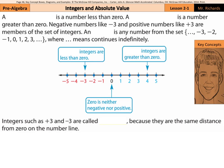Hi, Mr. Richards here. Today's lesson is on integers and absolute value. To start, a negative number is a number less than zero. A positive number is a number greater than zero. Negative numbers like negative three and positive numbers like positive three are members of the set of integers.